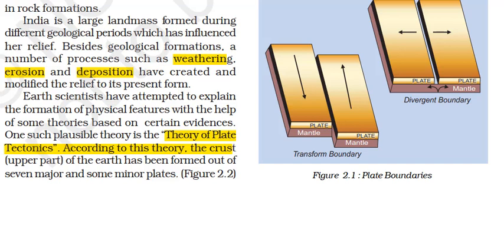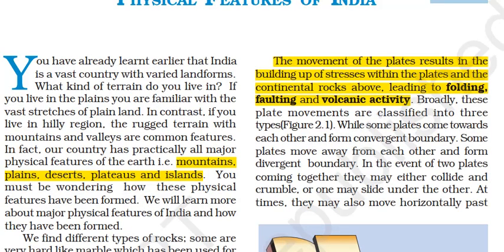The Theory of Plate Tectonics is the most important theory, and it explains how relief features are formed. According to this theory, the crust — the upper part of the earth — is formed of seven major plates and some minor plates. The movement of these plates leads to folding, faulting, and volcanic activity. Fold mountains form due to folding, rift valleys form due to faults, and new features and mountains form due to volcanic activity.